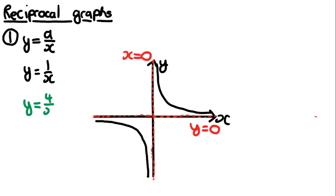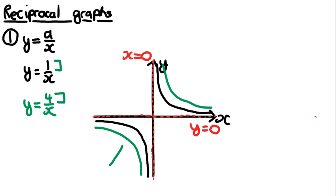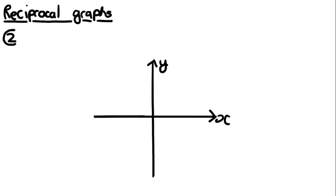If we sketch y = 4/x on the same axes, the graph will look exactly the same but will be further away from the axes. In general for all reciprocal graphs, making the numerator bigger just moves the line further away from the axes, while the asymptotes remain exactly the same.